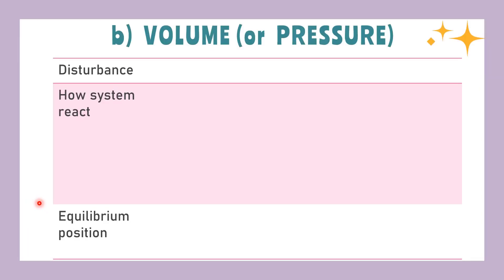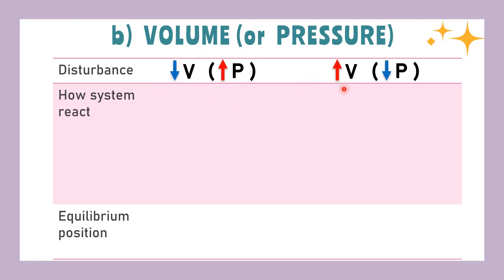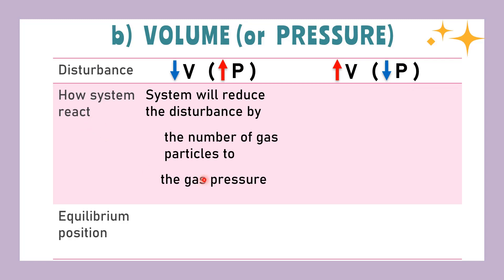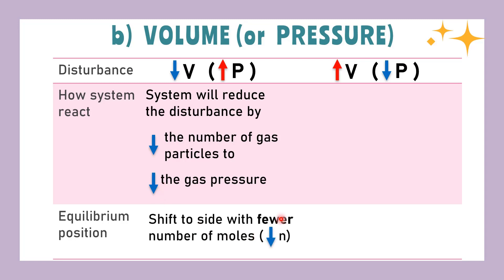The second disturbance is in terms of volume or pressure. If either variable is mentioned, the same explanations can be used — decreased in volume is the same as increased in pressure, and increased in volume is the same as decreased in pressure. The system will react by counteracting the pressure applied. For increased pressure, to restore equilibrium, the pressure must be reduced by reducing the number of gas particles, so equilibrium positions will shift to the side with fewer number of moles until a new equilibrium is achieved.